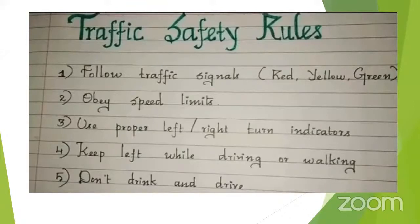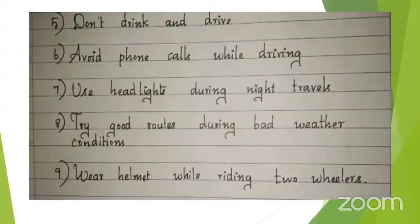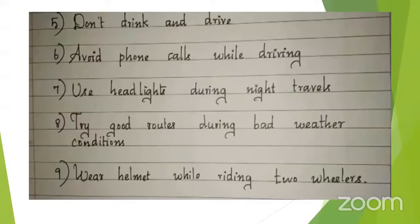Fifth: don't drink and drive. Sixth: avoid phone calls while driving — don't use your phone while driving. Seventh: use headlights during night travel. Eighth: use a good route during bad weather conditions such as cloudy, rainy, or thunderstorm. And the last one: wear a helmet while riding a two-wheeler.